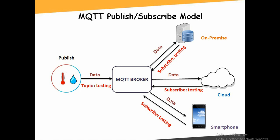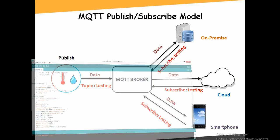In our setup, the NodeMCU acts as a publisher and will publish sensor values to the MQTT broker on topic name 'testing'. The MQTT broker is what we have installed on our PC or laptop. You can use the same topic name to subscribe and receive data published by the NodeMCU. Let's see the demo — open Arduino IDE.